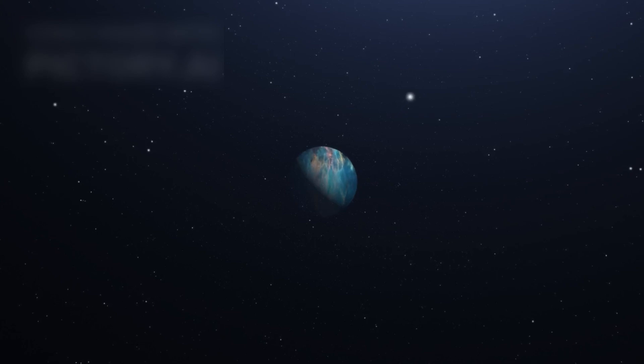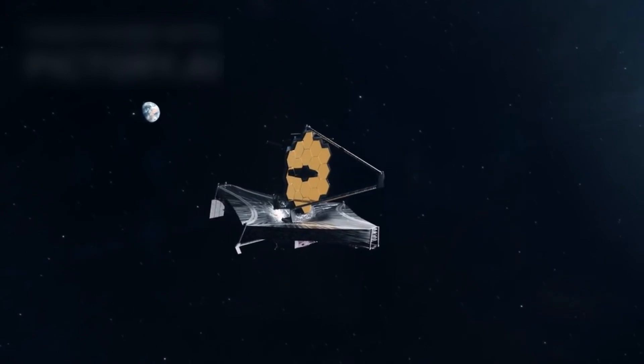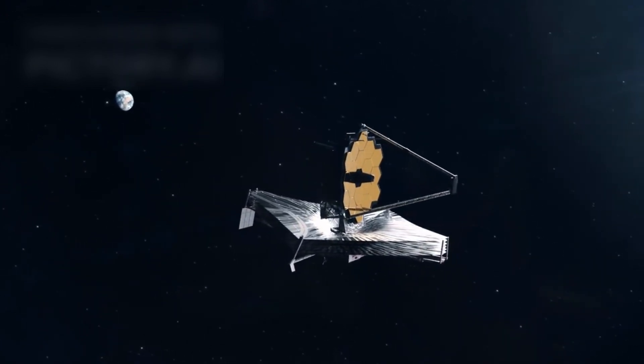A mysterious planet has captured the imagination of scientists and space enthusiasts alike. The James Webb Space Telescope, JWST, humanity's most advanced tool for exploring the cosmos, has unveiled the clearest image of Proxima b ever seen.